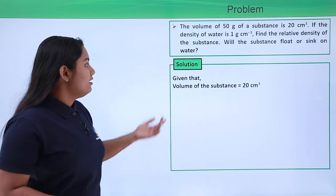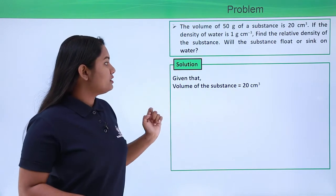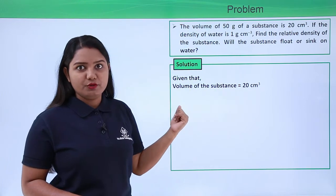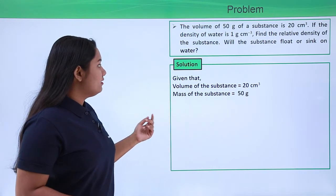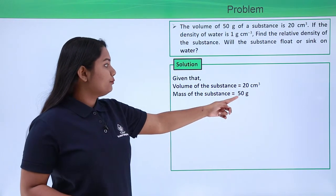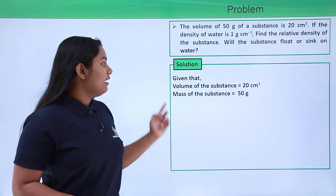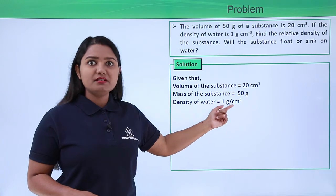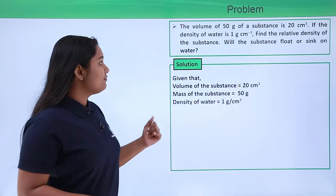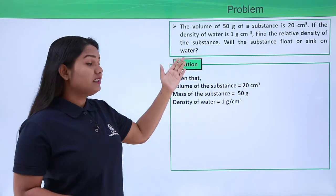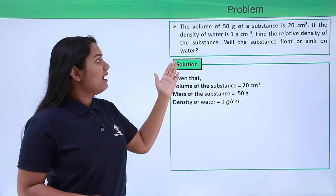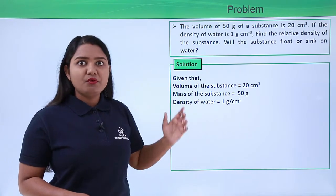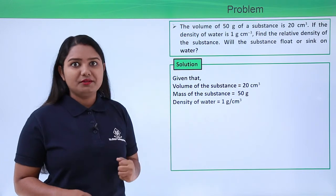Now let us list out whatever is given in the question. The volume of the substance is given to be 20 centimeter cube, the mass of the substance is given to be 50 grams, and the density of water is given to us which is 1 gram per centimeter cube. With this information we need to find the relative density of the substance and also check if the substance will float or sink in water.